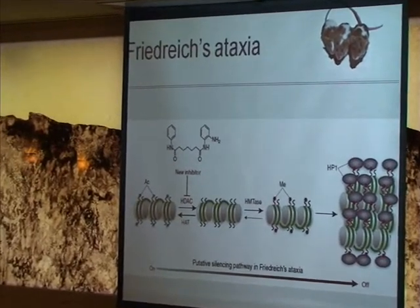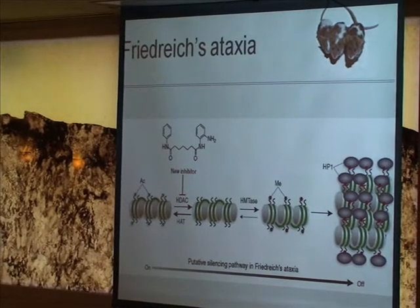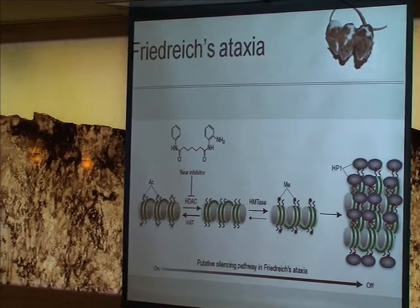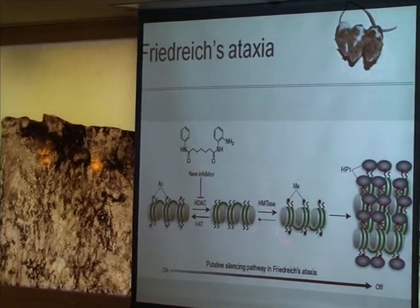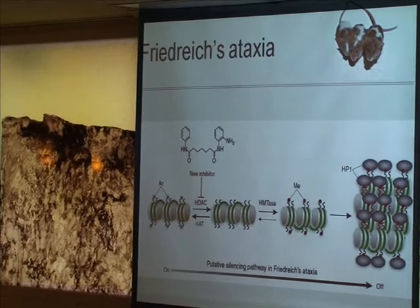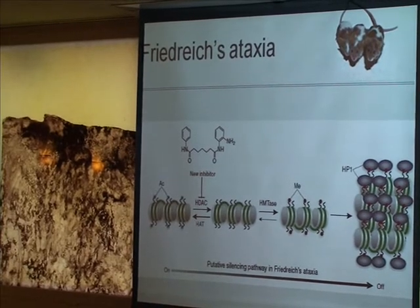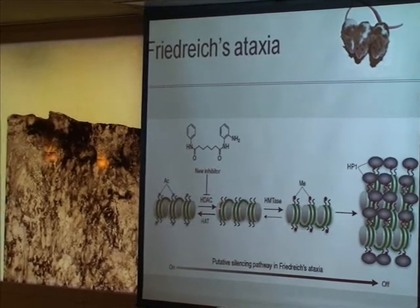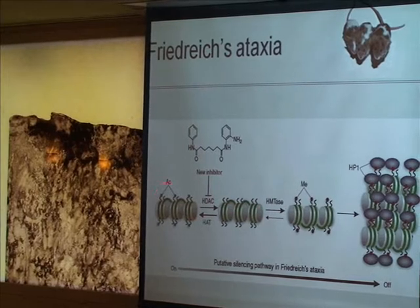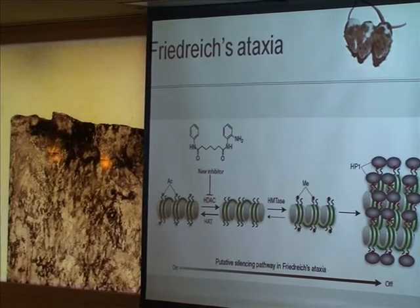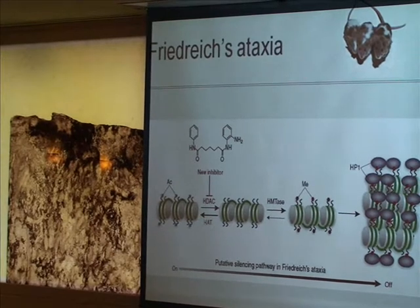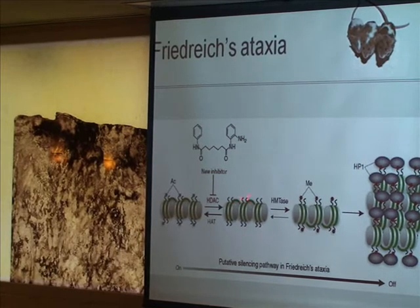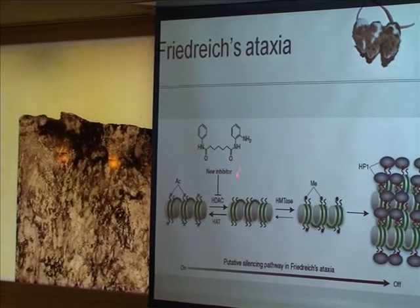What we think is happening at the frataxin gene is that the GAA repeat expansion — which is recognized by certain proteins — triggers a mechanism that leads to histone deacetylation, loss of acetyl groups, tight chromatin packaging, and essentially silencing of the frataxin gene.